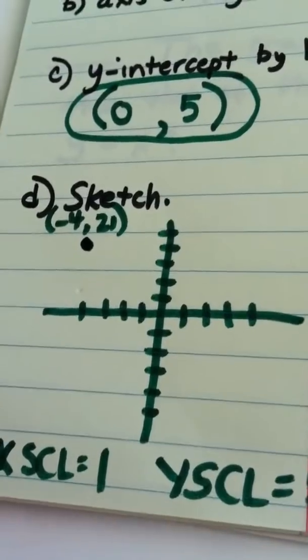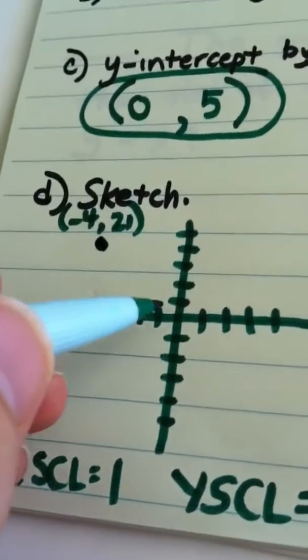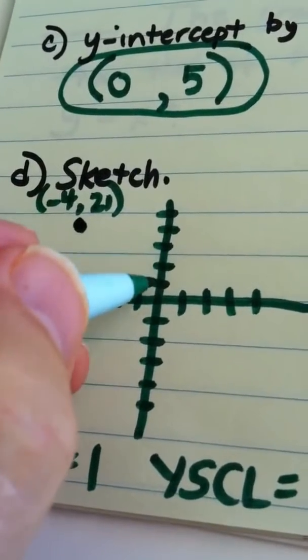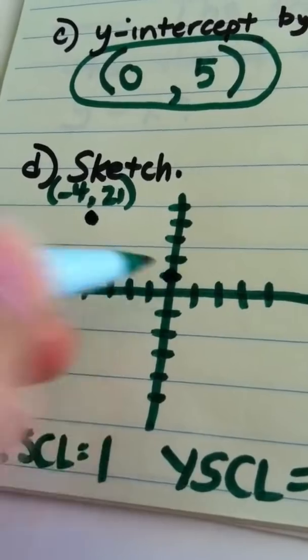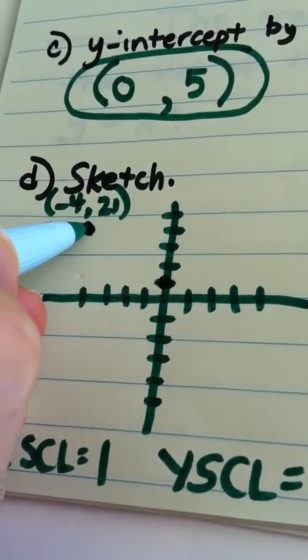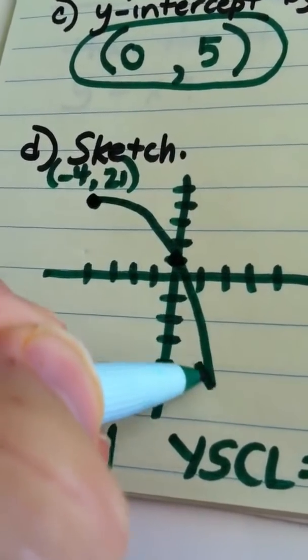My y-intercept is 0, 5. But since the y-scale is 5, every tick mark represents 5, so it's right there. So my graph is going to open and cross the y-axis here.